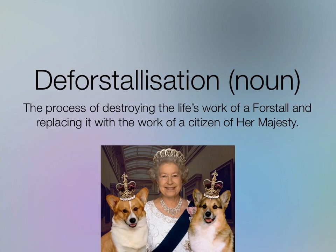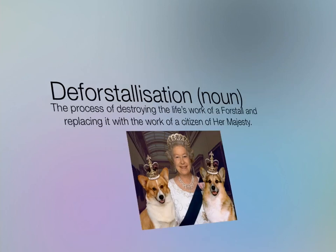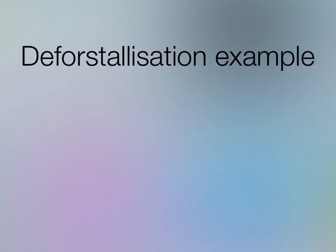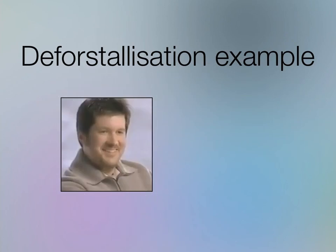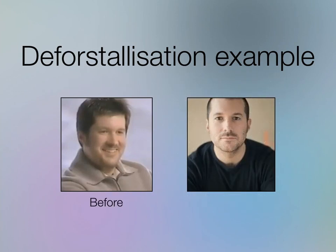Here's a quick example of deforstallization. If you imagine this is what we had before iOS 7 — that's the before — and this is, of course, the much more streamlined after. A distinct improvement. Both these pictures are of Jony Ive: this is him in his early days in the early 90s, and this is him now. As you can see, he's a lot smoother and less skeuomorphic.